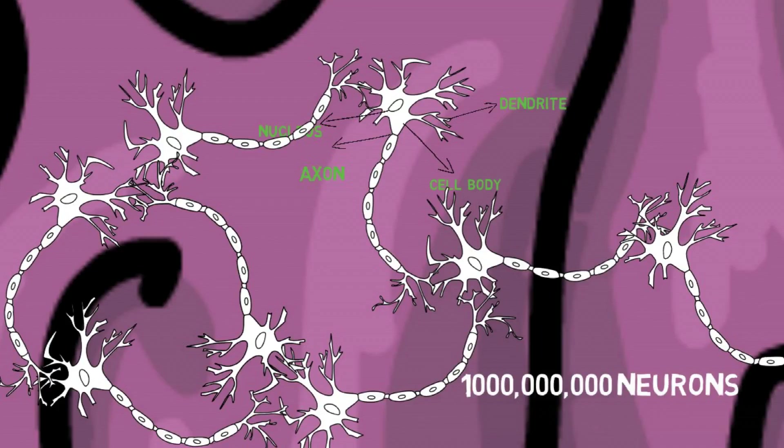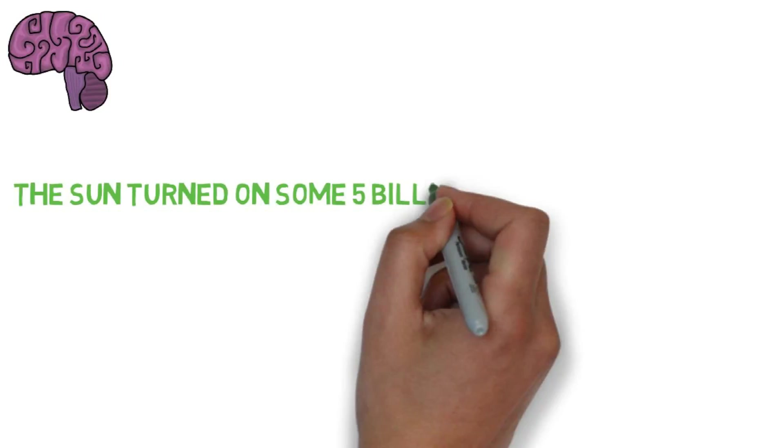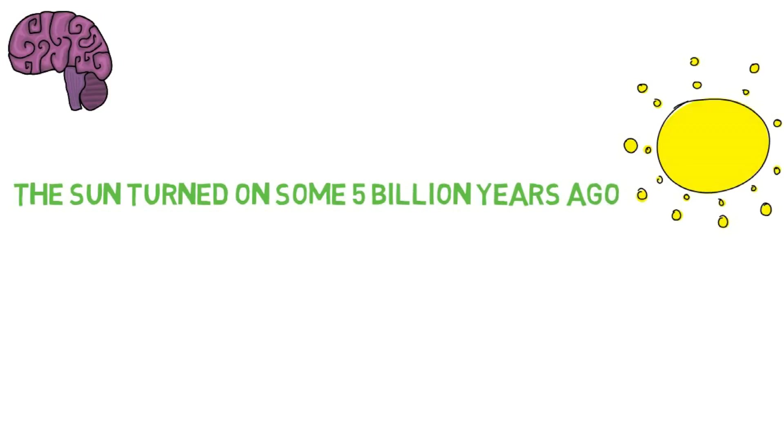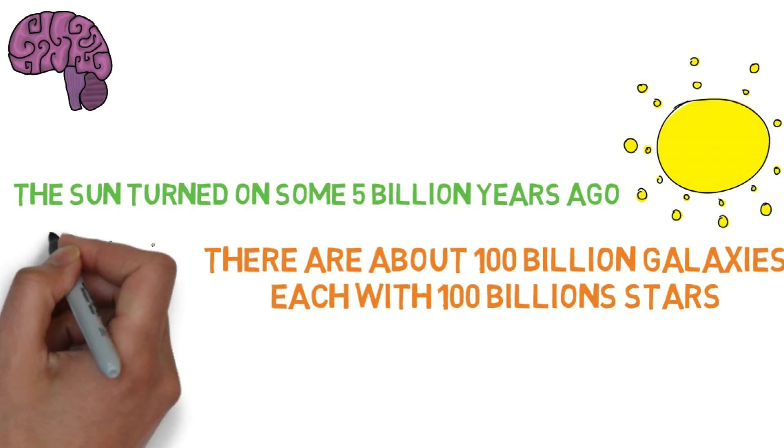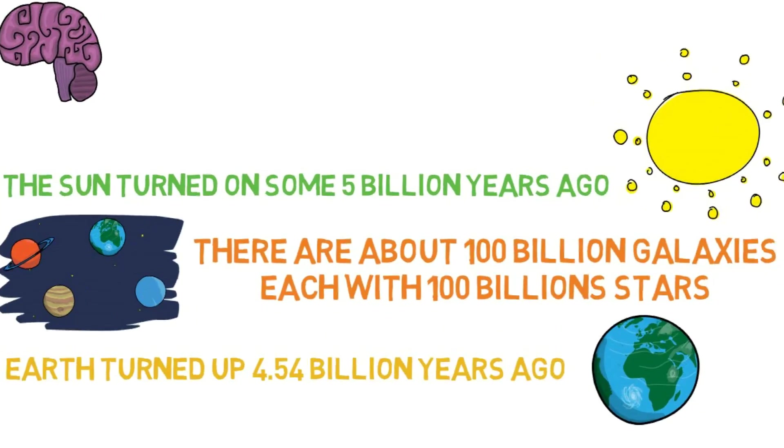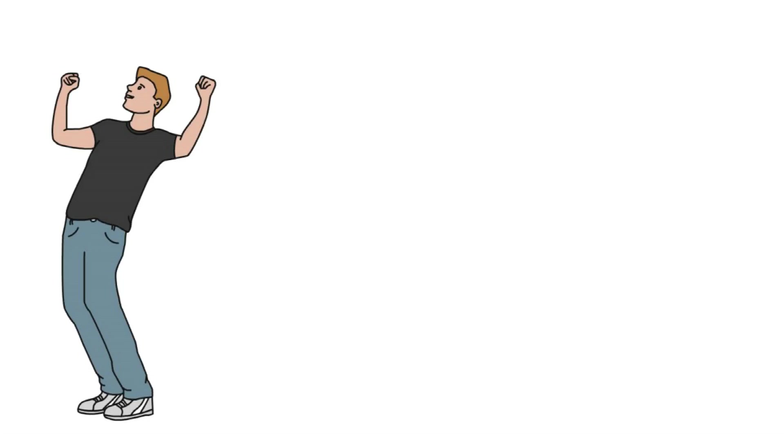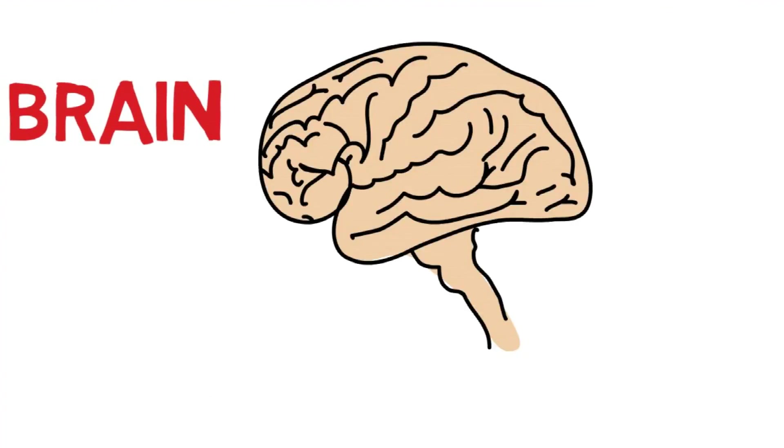Forming one thousand trillion connections. Here are a few numbers for you to consider: The sun formed some five billion years ago. There are about one hundred billion galaxies, each with one hundred billion stars. Earth formed four point five four billion years ago. And finally, we the humans - we are here since two billion years ago, and so is our brain.